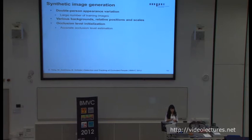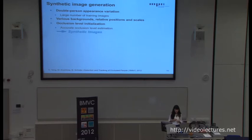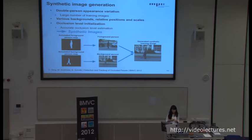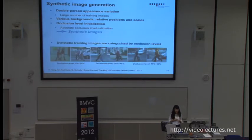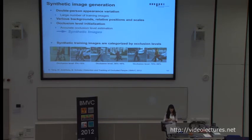Instead of expensively collecting and annotating training images, we choose to generate them. This is the pipeline: we extract people's silhouettes from the annotated person map, and then combine them to generate the synthetic training image. All synthetic training images are categorized by different occlusion levels, and here I show the examples used to train our double-person model.